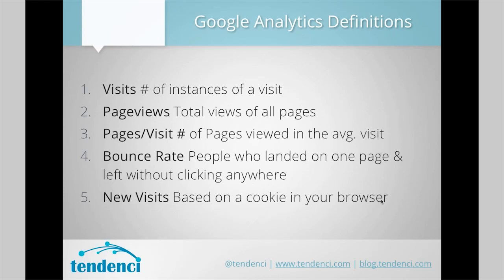Pages per visit is the number of pages viewed in the average visit. Bounce rate means someone landed on your website — probably your homepage — and didn't click on anything; they just left. For bounce rate, higher is worse — you want it to be low, meaning fewer people bounced and more people stayed. We'll get into some benchmarks for those in just a second.